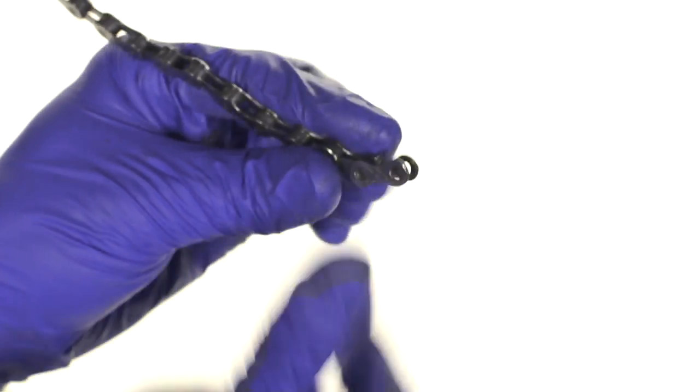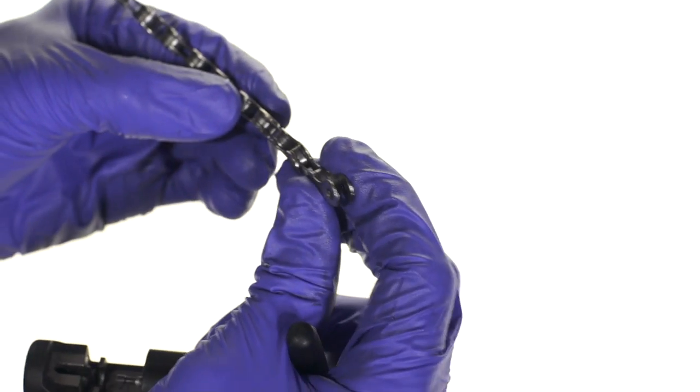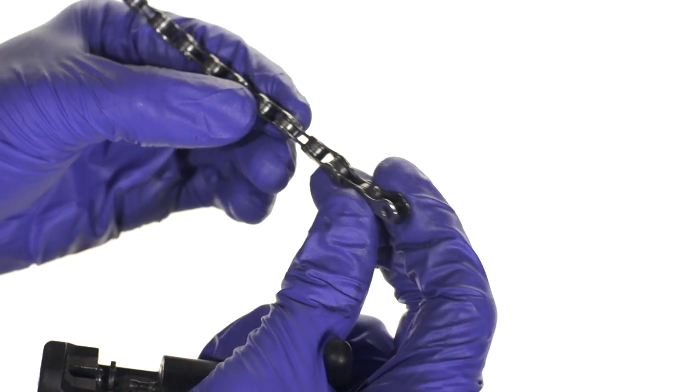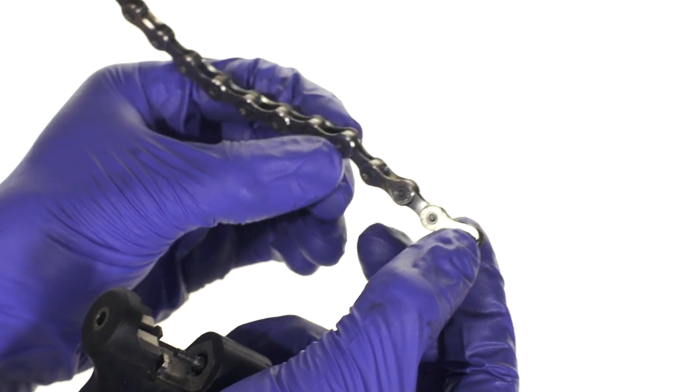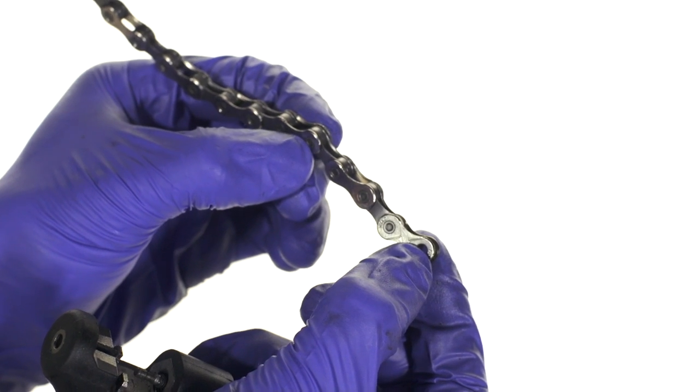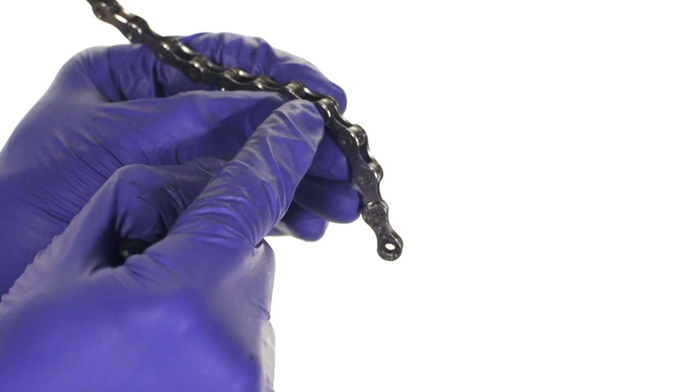All right, so now we need to get to the other end. So we'll just check one more time and we need to have the end that we took off match the end that we're going to create. So this is where the good chain starts again.